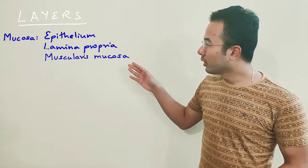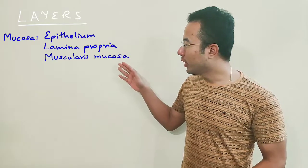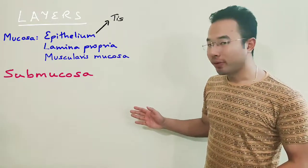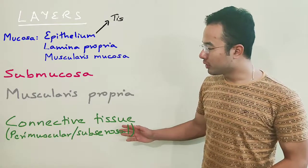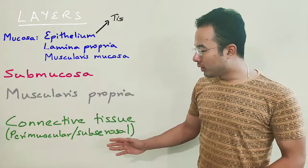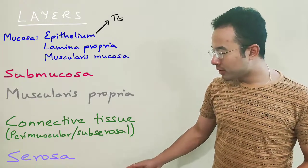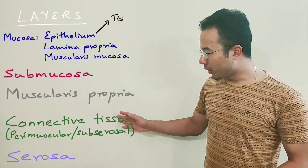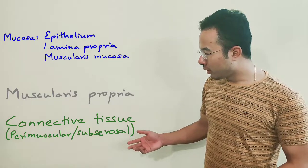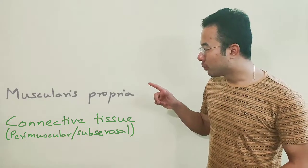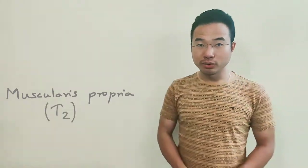Now let's take a look at the various layers of these viscera. First we have the epithelial layer, then the lamina propria, and the muscularis mucosae. Next is the submucosa, then muscularis propria, then a connective tissue layer known as the perimuscular or subserosal connective tissue, followed by the serosa, and finally the adjacent organs. What you need to remember is that the muscularis propria layer is T2, with some exceptions.